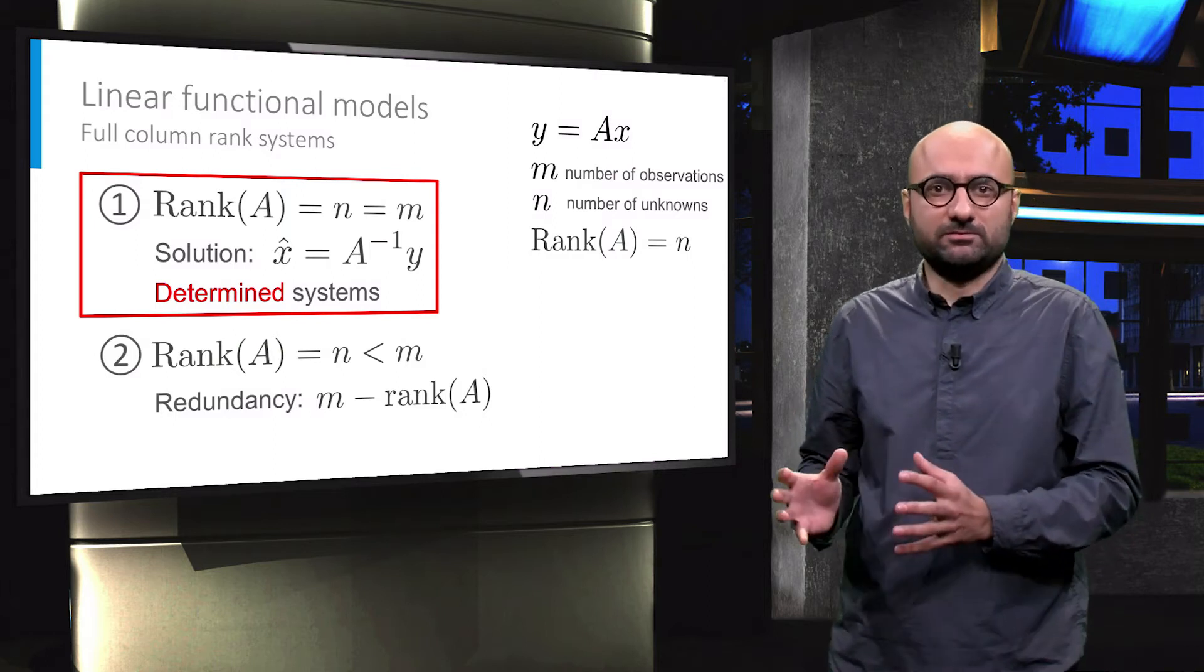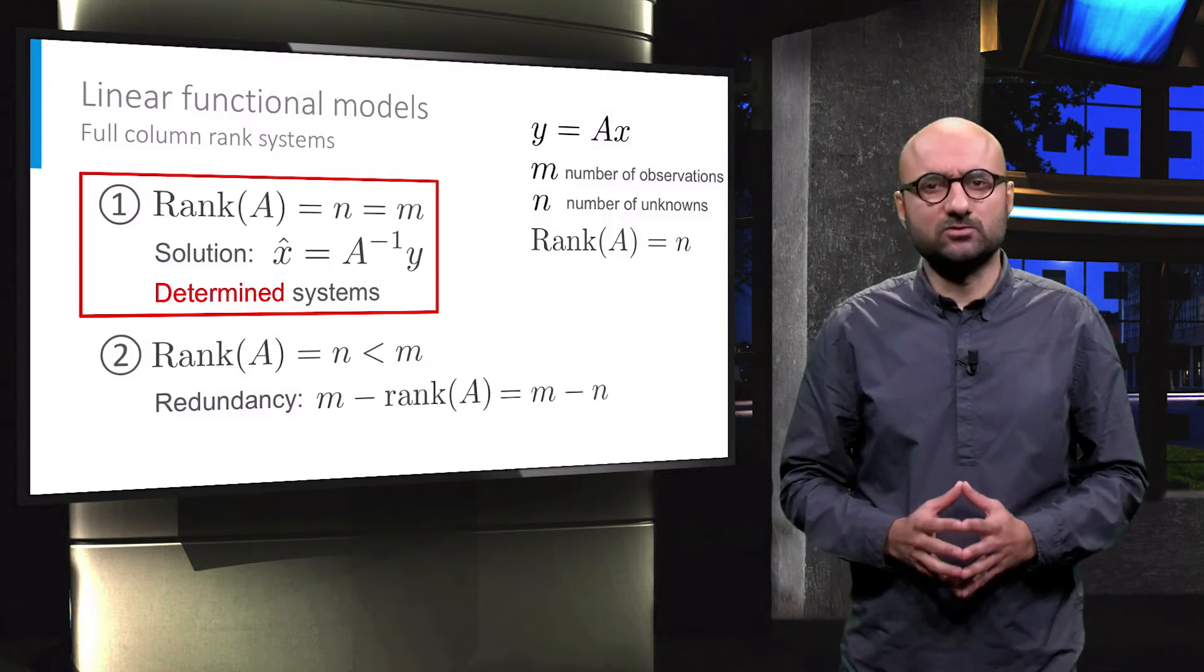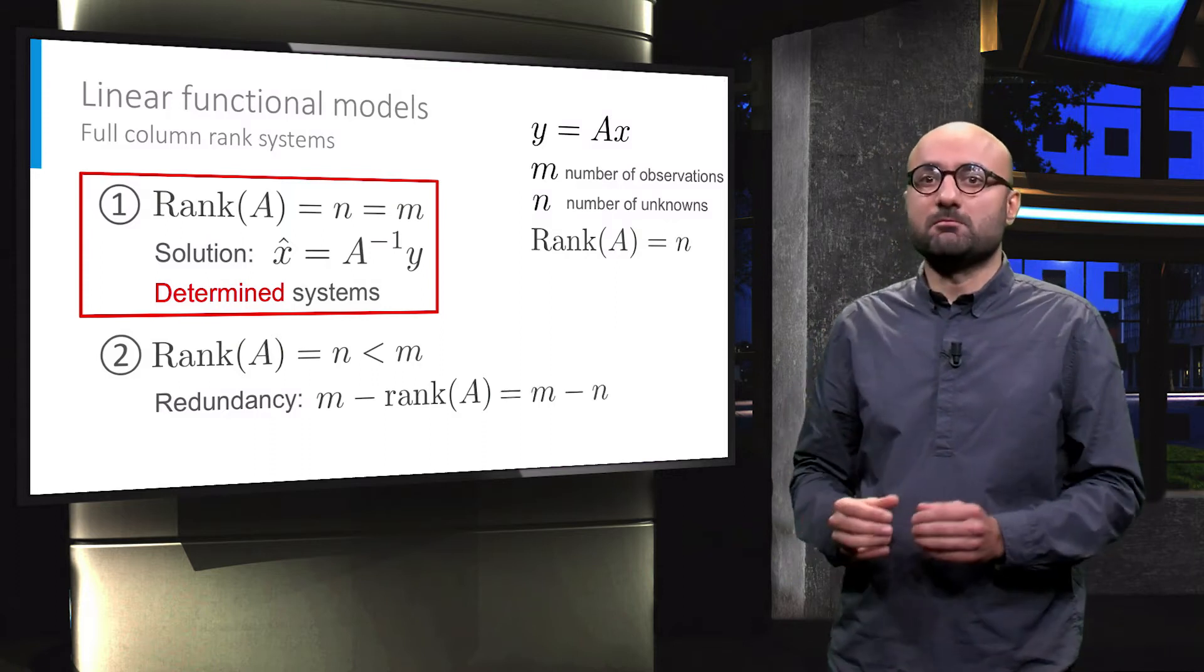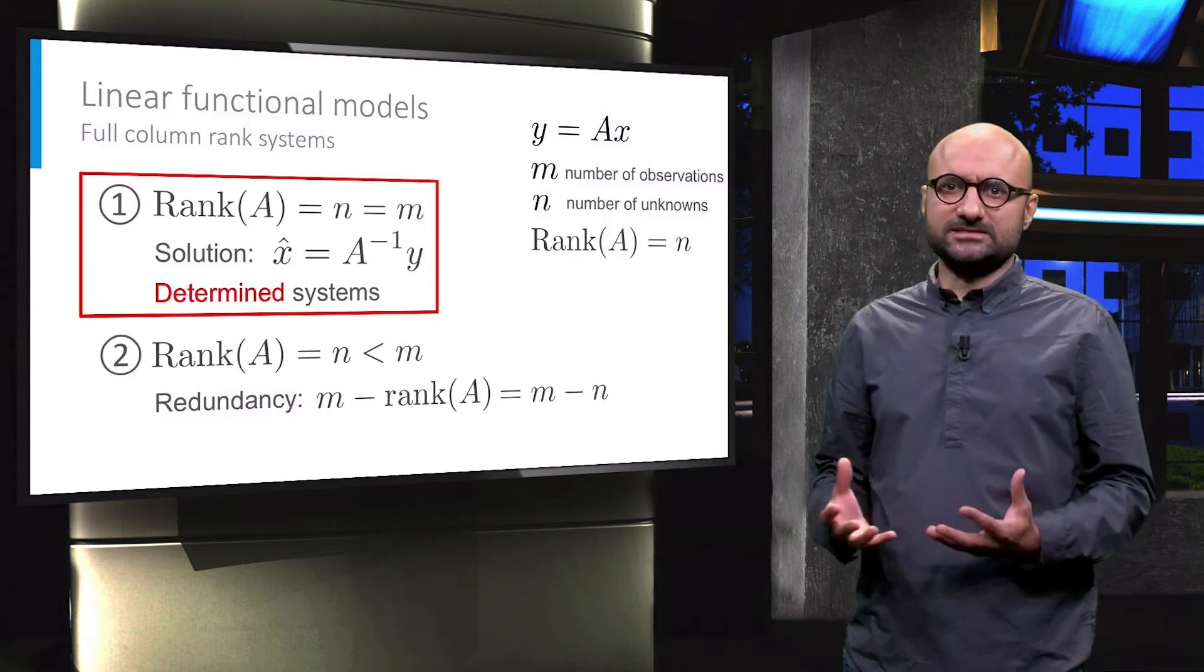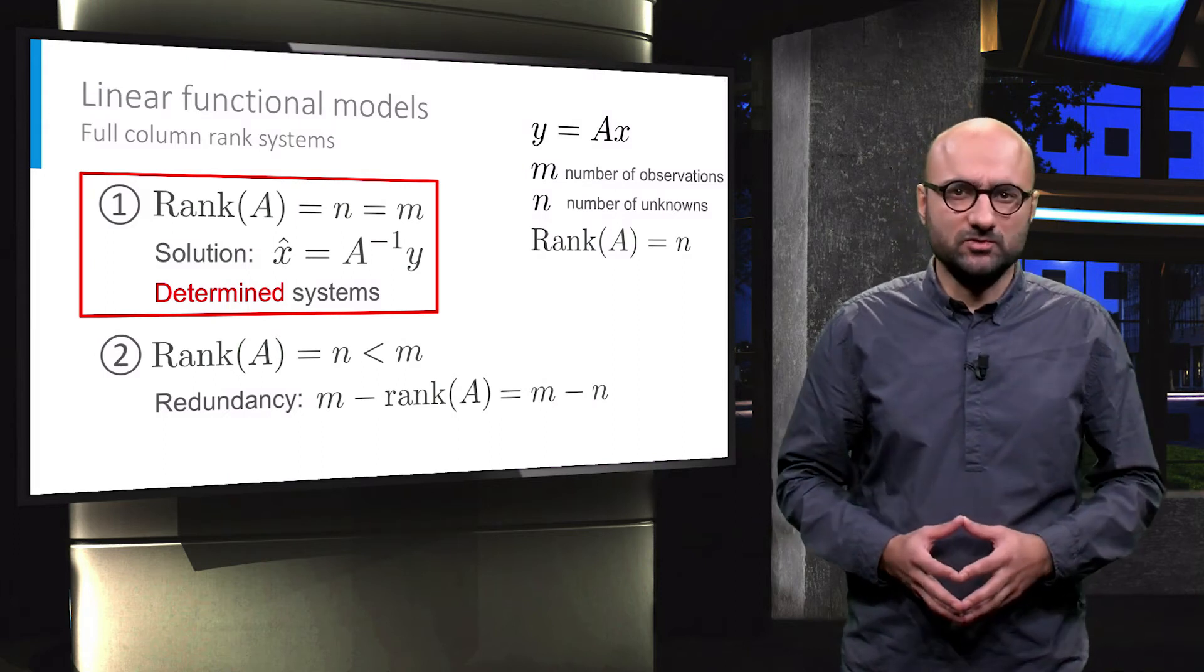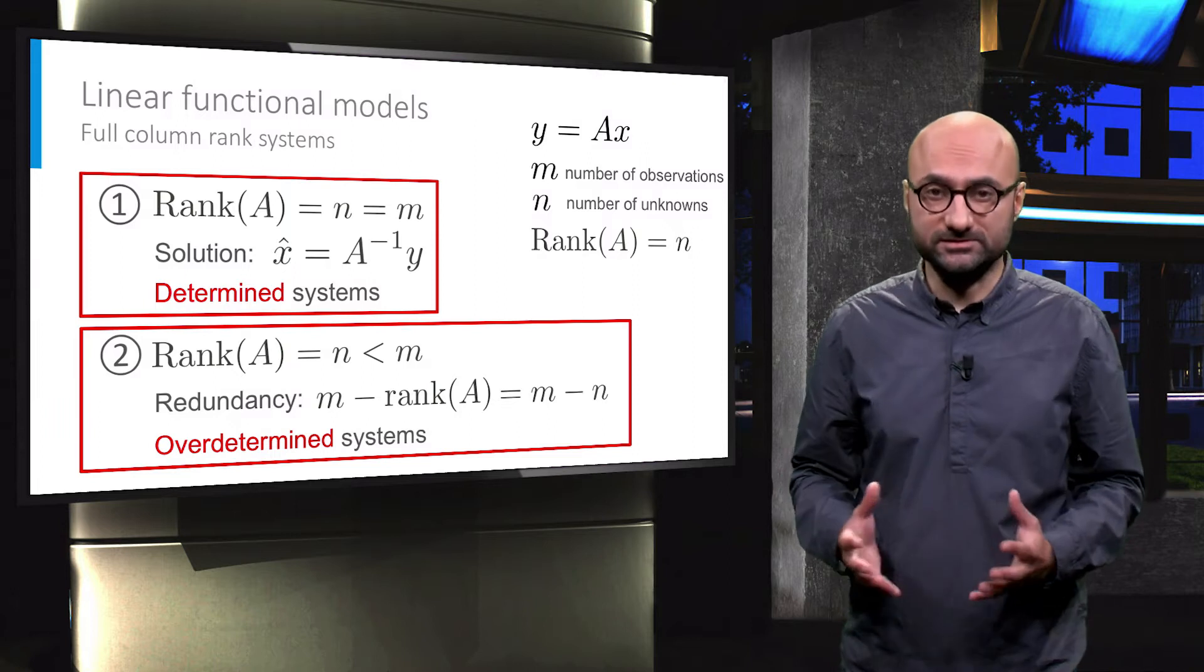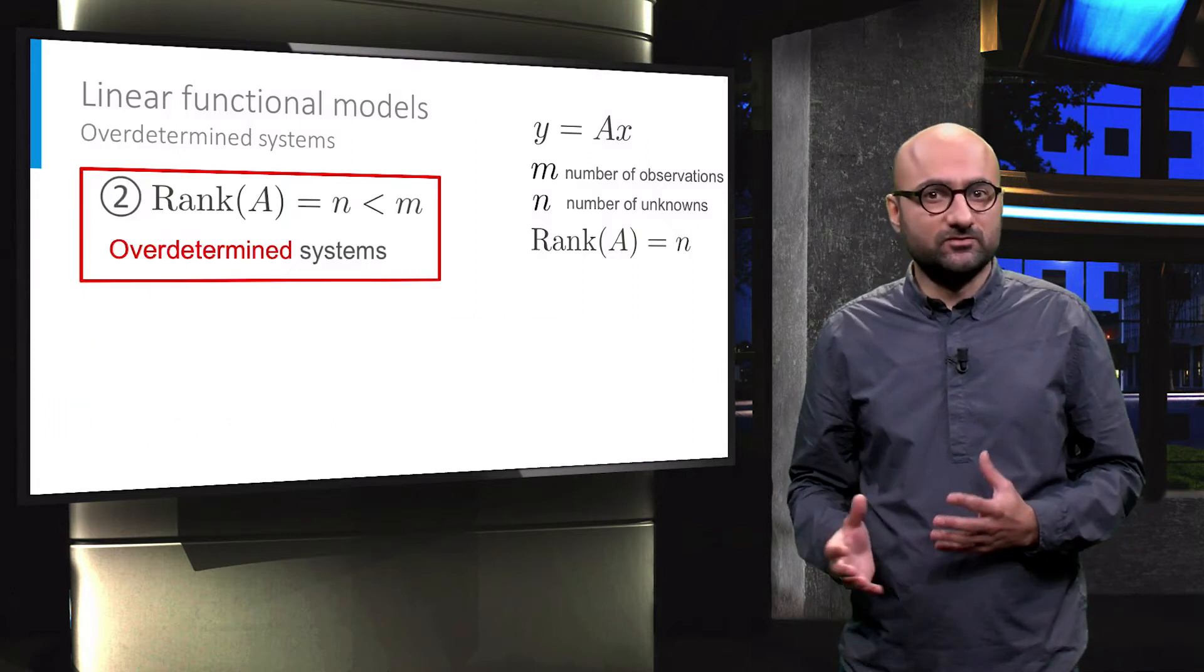In our case where we have a full column rank matrix, that is the rank is equal to n, the redundancy is equal to the number of observations minus the number of unknowns. These kinds of systems with the number of equations larger than the number of unknowns or with positive redundancy are called over-determined systems.